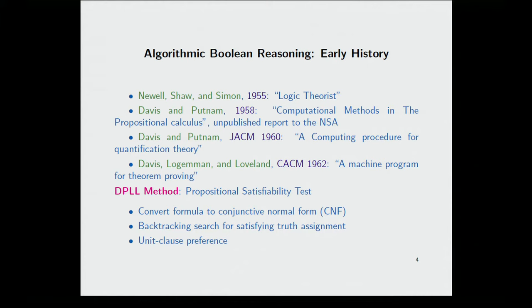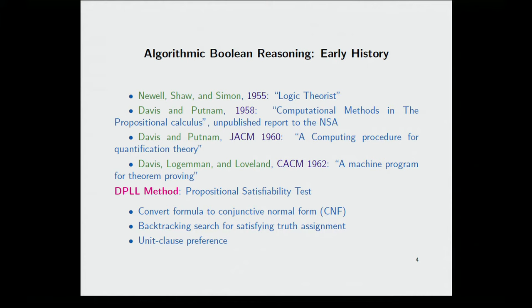And so, but at the same time, as we have the development in complexity theory, people already, going back to the mid-fifties, started building programs for doing, essentially, Boolean reasoning. And the first one is due to Newell, Shaw, and Simon, and they wrote a program called Logic Theorist, and they were able to prove about 150 theorems from Principia Mathematica about propositional logic. And they wrote to Russell, and Russell was happy. And the next important paper, Davis and Putnam, Computational Method in Predicate Calculus. It's a technical report to the National Security Agency. It was not published. I think today it's available, but it was not published for many years. But I always make sure I give them credit, because I know that they are listening.